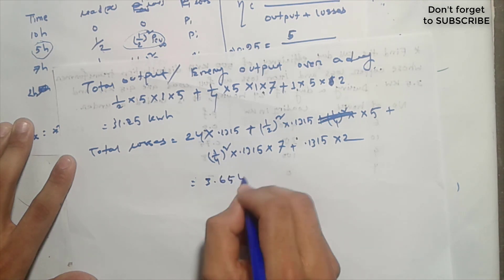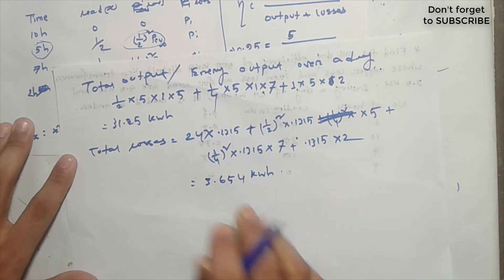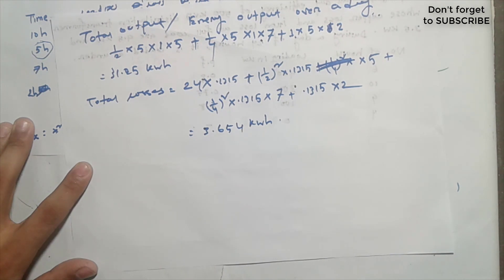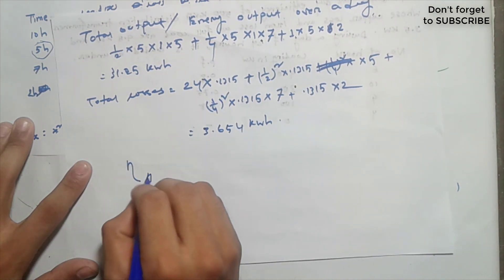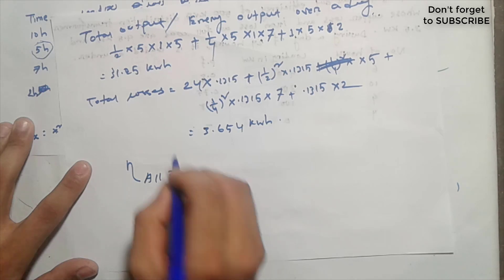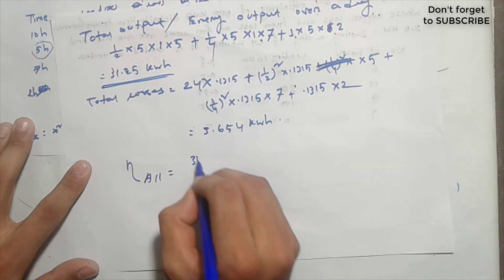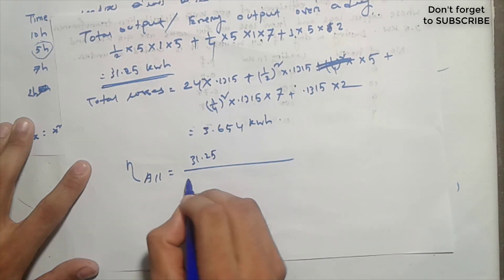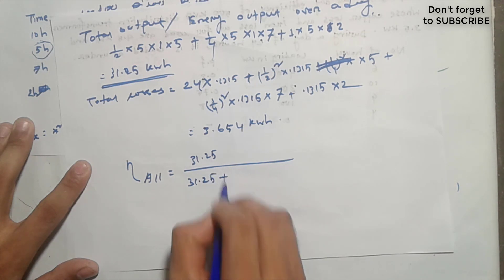The total losses over 24 hours come to 3.654 kilowatt-hours. The all-day efficiency eta equals energy output over the day — 31.25 kilowatt-hours — divided by 31.25 plus total losses of 3.654 kilowatt-hours.